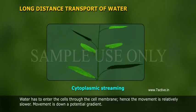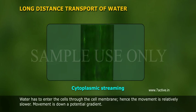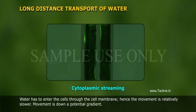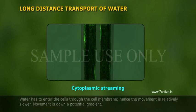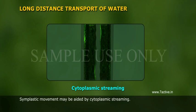Water has to enter the cells through the cell membrane, hence the movement is relatively slower. Movement is down a potential gradient. Symplastic movement may be aided by cytoplasmic streaming.